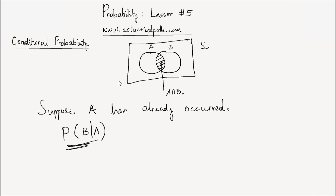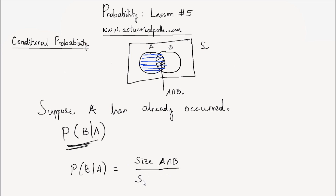Since A has occurred, let me shade the region covered by A in blue. Given A has already occurred, B can only occur in the part that is inside A. The part of B that is inside A is the intersection. The probability of B given A is the size of the intersection, which is A intersection B, divided by the size of event A.